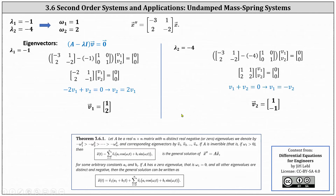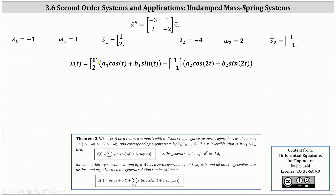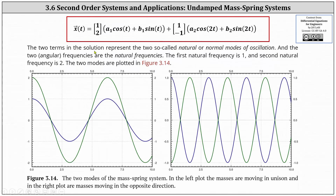Now we have all the information needed for the general solution. Because we have two negative eigenvalues, we use the first formula. X of T equals eigenvector V one times the sum of A one cosine T and B one sine T — with inputs of T because omega one equals one — plus eigenvector V two times the sum of A two cosine two T and B two sine two T, with inputs of two T because omega two equals two.